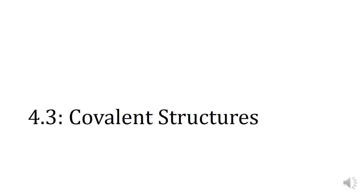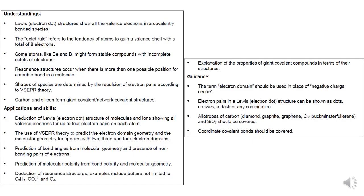Covalent structures can be discussed in a variety of ways: Lewis structures, the octet rule, incomplete octets, resonance, and VSEPR — covering carbon and silicon networks. We'll look at deducing Lewis structures, using VSEPR to predict bond angles, using bond angles and bond polarity to work out molecular polarity, and resonance structures.